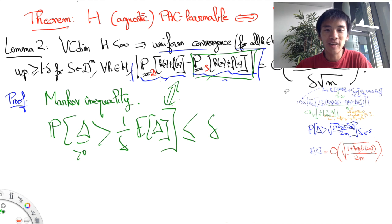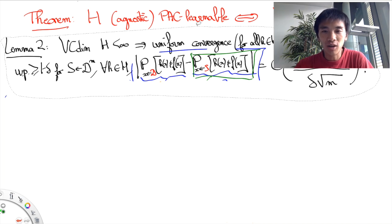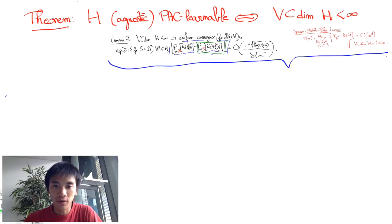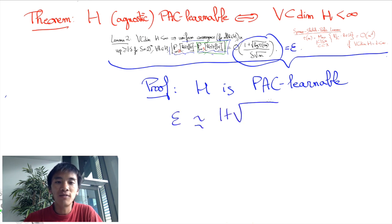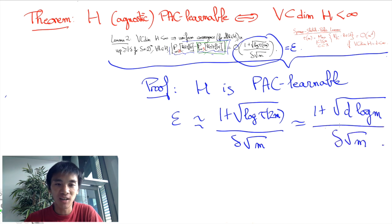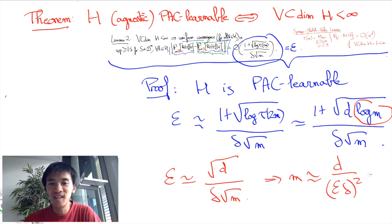Finally, we can conclude by combining the two lemmas. It's mostly only algebra at this point, although a bit of care is required to convert the statement about the uniform convergence into a statement about PAC learnability. Once again, I am skipping a lot of details. But eventually, we see that we have roughly the condition that epsilon must be smaller than 1 over delta times the square root of D divided by M. Isolating M yields that M must be larger than D divided by epsilon delta squared. This is a polynomial in 1 over epsilon and 1 over delta squared, roughly.